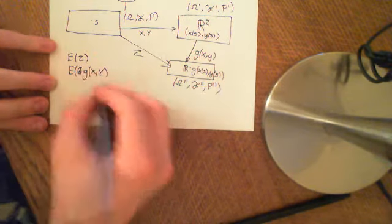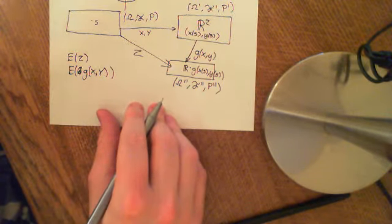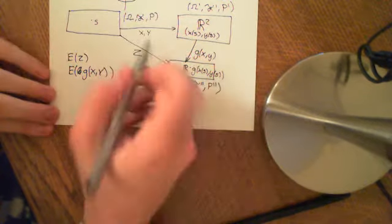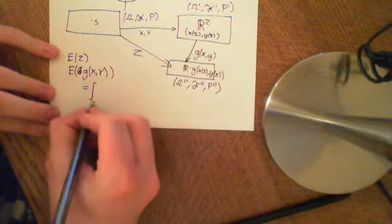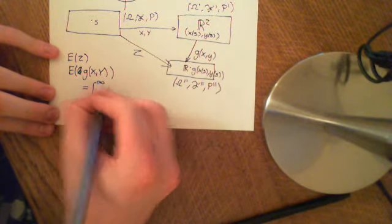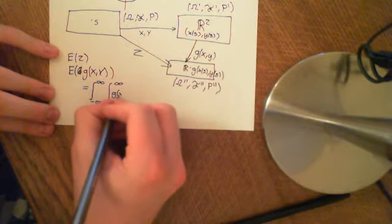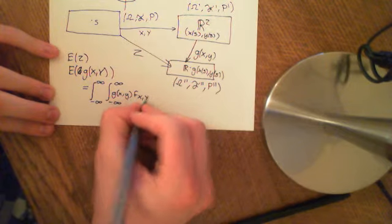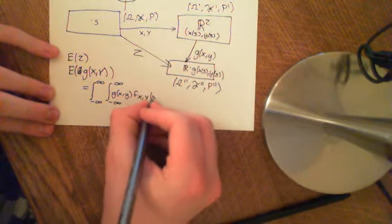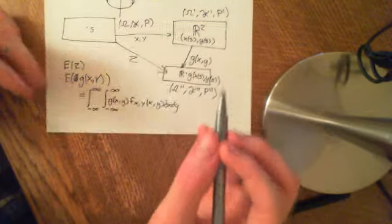The law of the unconscious statistician for a bivariate distribution says that the expected value of g(X, Y) is equal to the integral from negative infinity to infinity, the integral from negative infinity to infinity, of g of little x, little y, times the joint probability density function evaluated at x, y, dx dy.